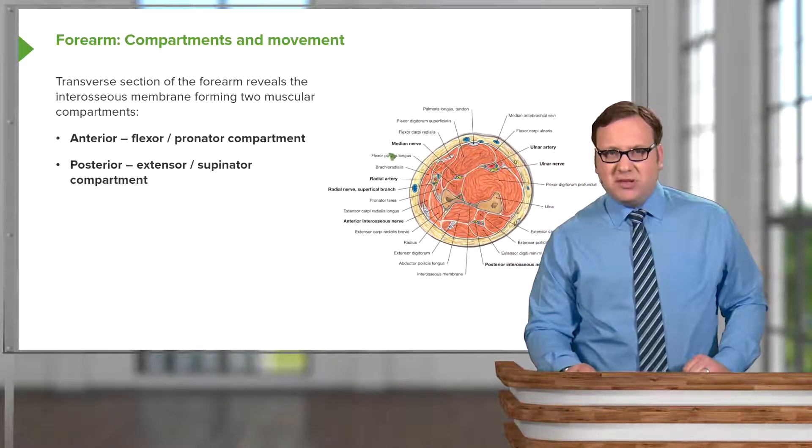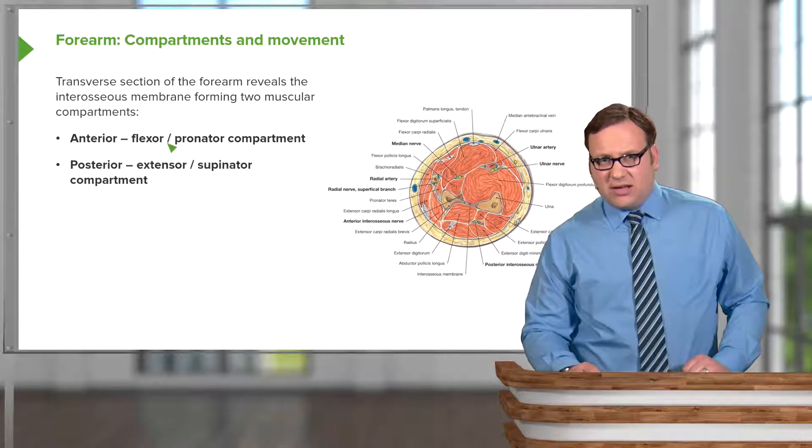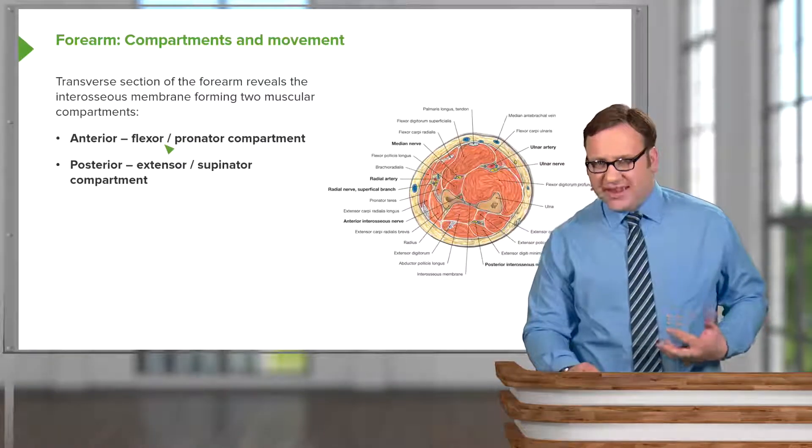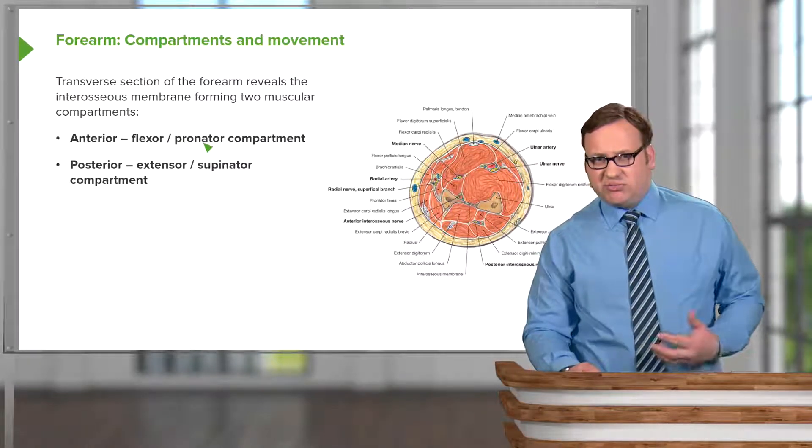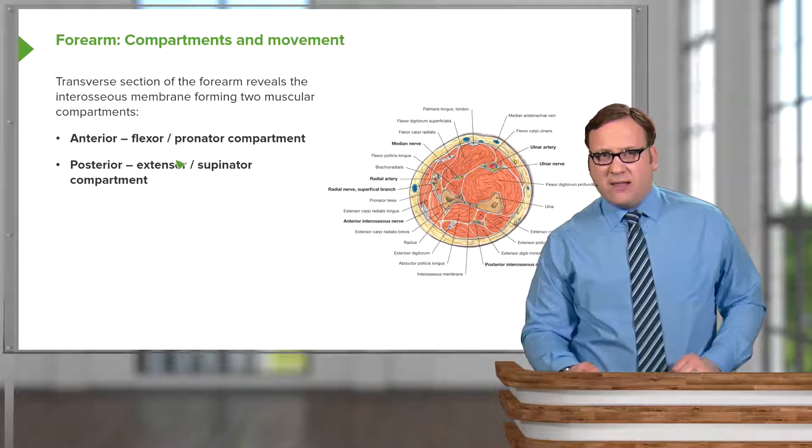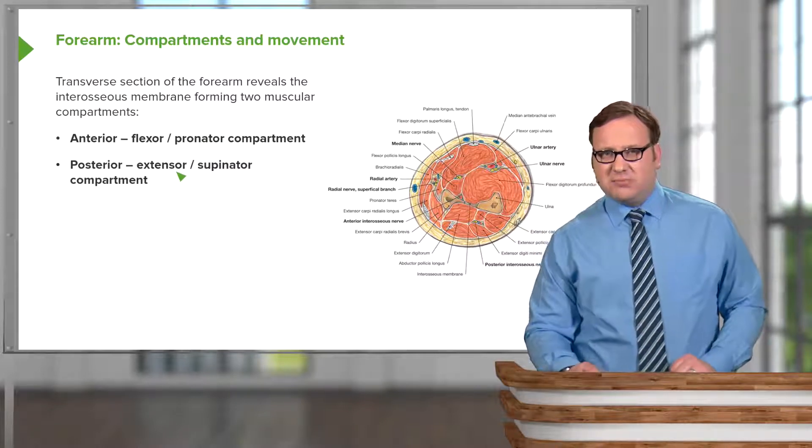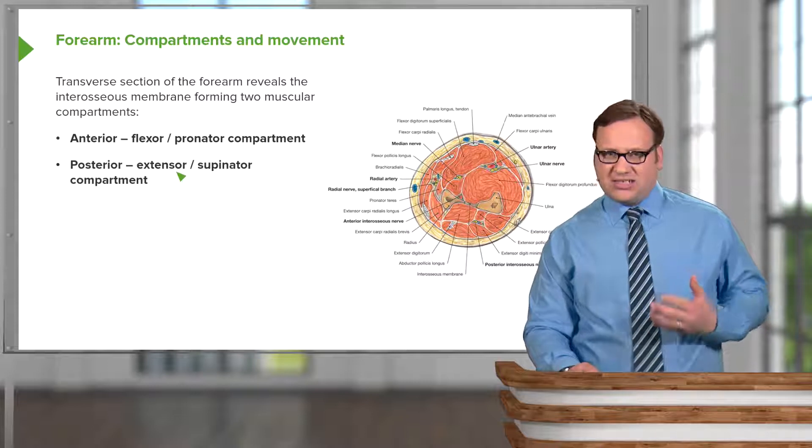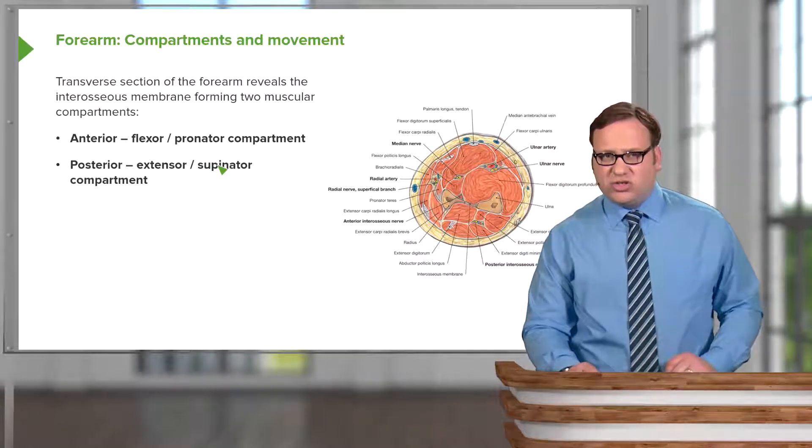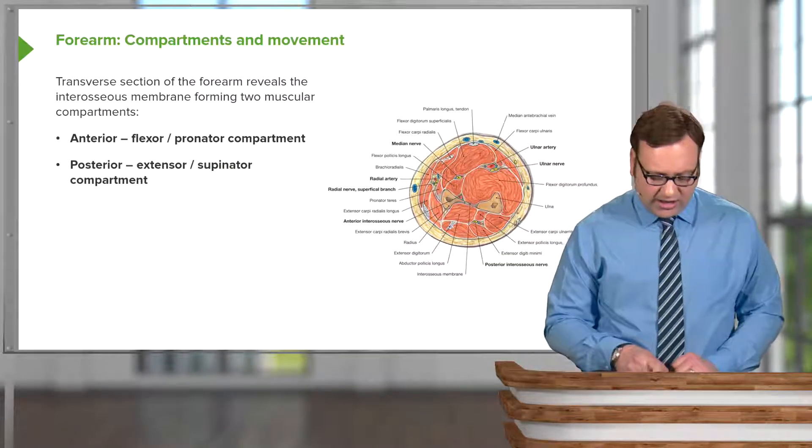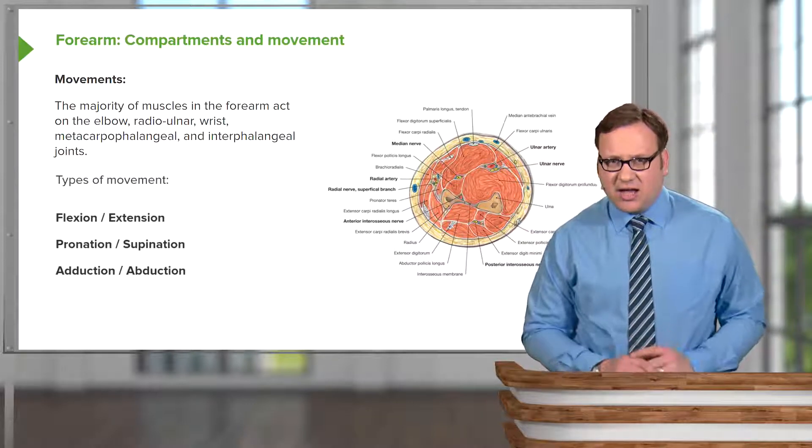The anterior compartment contains muscles that are ultimately going to flex the wrist. They're also associated with pronation of the forearm. The posterior compartment contains muscles that are principally going to extend the wrist and also supinate the forearm. But there's also some other movements that can occur.